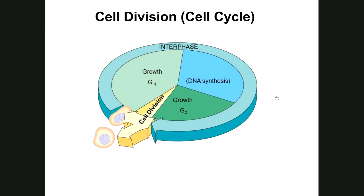Cell division — both chapters 12 and 13 — focus on the cell cycle. Both types of cell division begin with the first of two major phases called interphase. Interphase is divided up into three smaller phases that take up roughly 90% of the time a cell is dividing. The three sub-phases are G1, S phase, and G2. When a cell is going to divide, it will always go through interphase first, whether it's the type of cell division from chapter 12 or chapter 13.